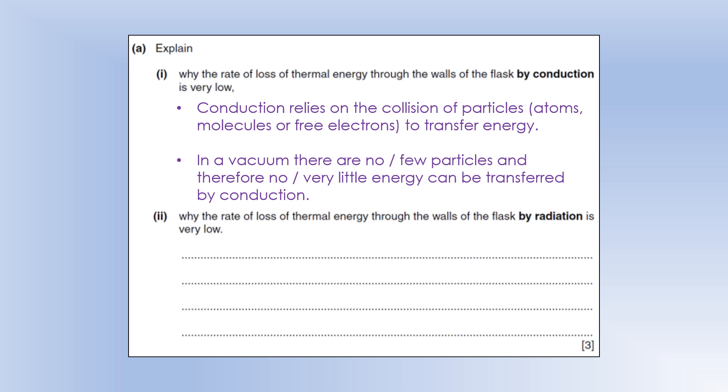So explain why the rate of loss of thermal energy through the walls of the flask by radiation is low. Well, it told us on the diagram and the instructions that these surfaces were shiny. And shiny surfaces are a good reflector and a poor absorber or emitter of infrared radiation. So what's going to happen is the infrared radiation gets reflected back into the container. If there's hot stuff in it, or if we decided to put cold stuff in it, it would reflect infrared radiation out of the container.